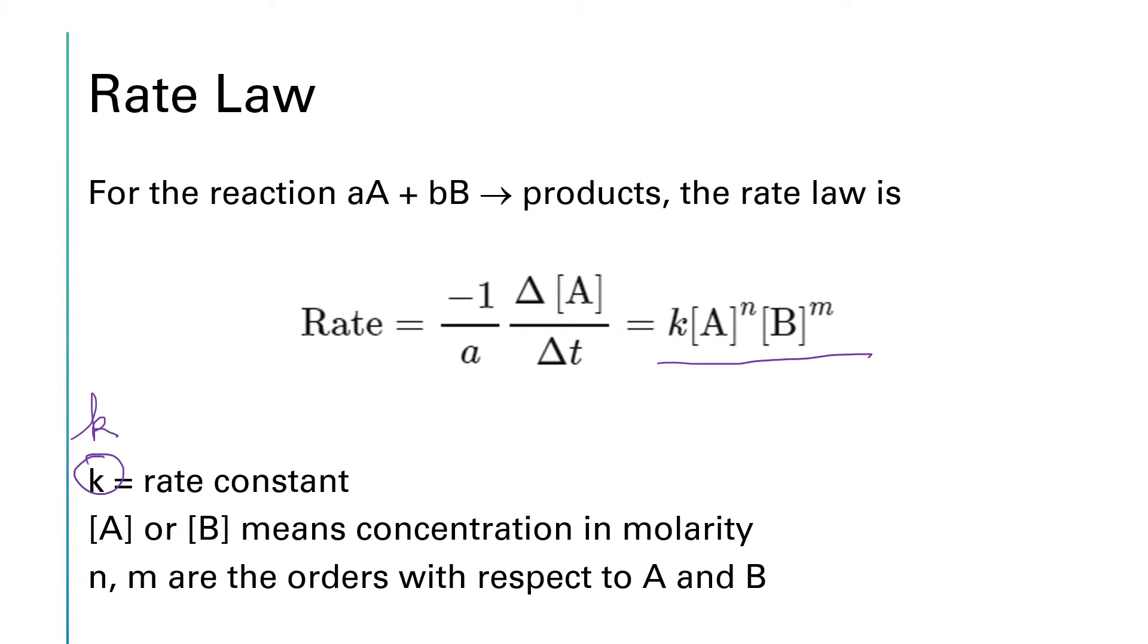And then the square brackets around A or B mean the molarity of the chemical A or the chemical B. And then n and m refer to the orders with respect to chemicals A and B.